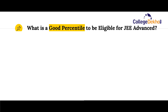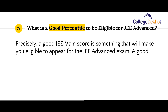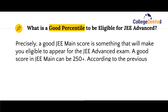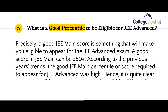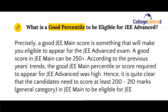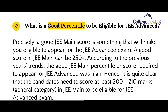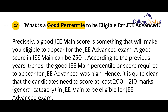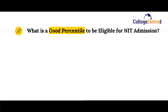Now let us look at what is a good percentile to be eligible for JEE Advanced. A good JEE Main score is one that makes you eligible to appear for the JEE Advanced exam. A good score in JEE Main can be around 250 plus. According to previous year trends, candidates need to score at least 200 to 210 marks from the general category in JEE Main to be eligible for JEE Advanced.